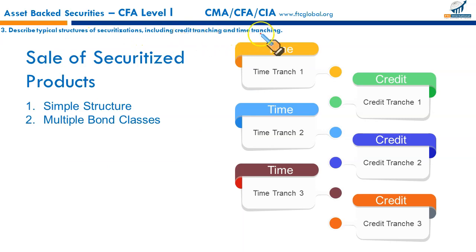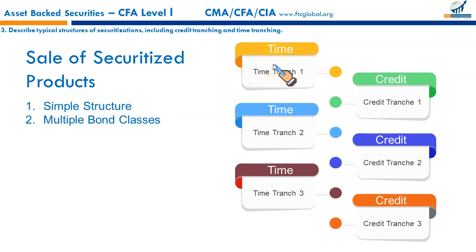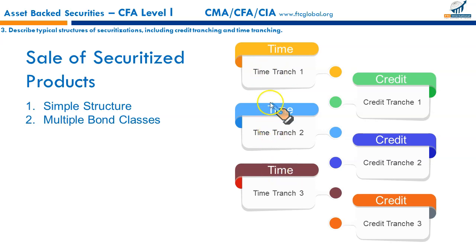Securitized products can be structured as a simple single bond class or, more commonly, multiple bond classes. In a time tranching structure, rules specify the interest and principal payment distribution mechanism across multiple bond classes. Some classes receive cash flows earlier and some later than others — this is called time tranching.